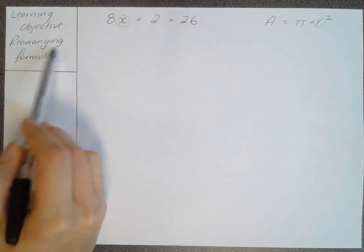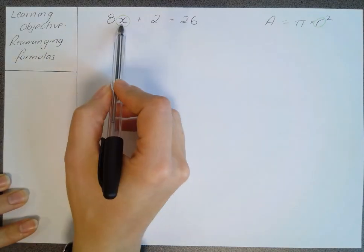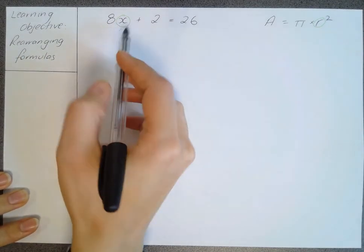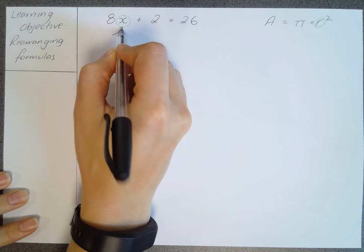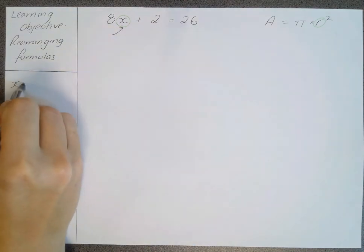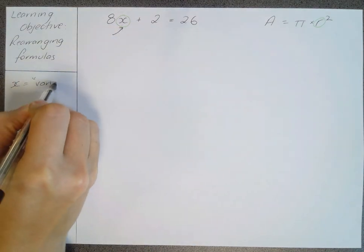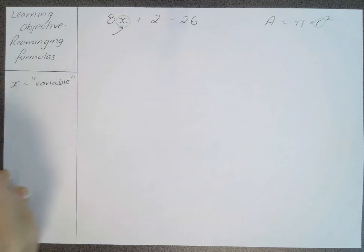In this lesson we're learning to rearrange formulas to make a different thing, the subject. And when I say the subject, I mean in this case, we are rearranging to make x, which is also known as our variable because it can change what number it is.